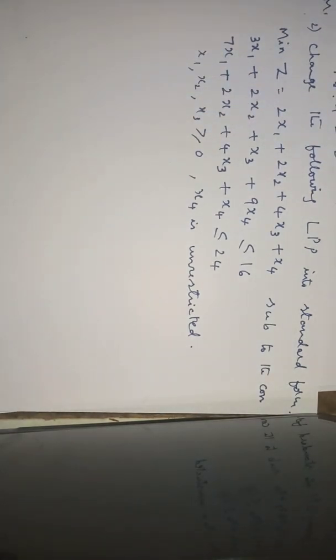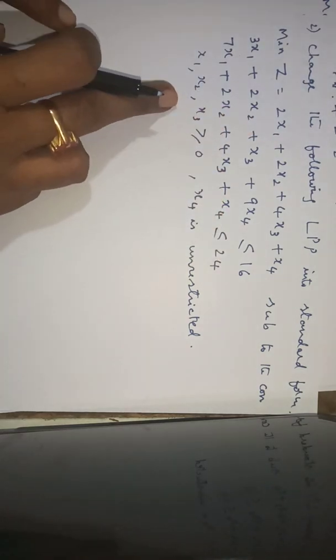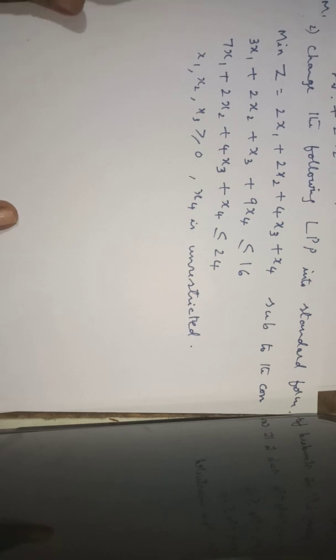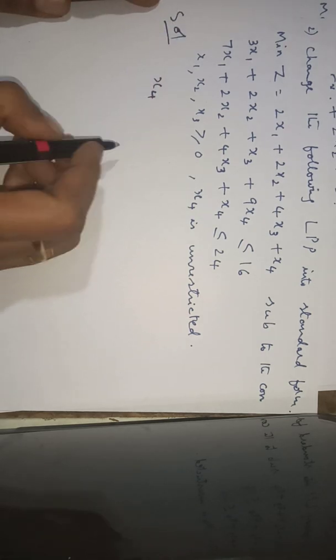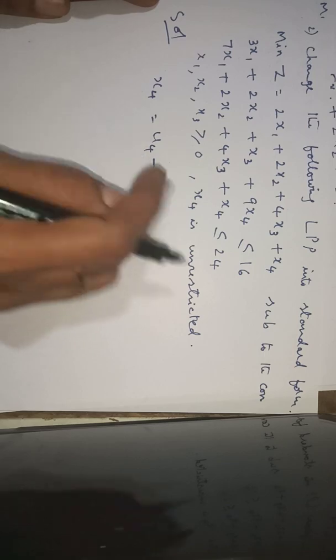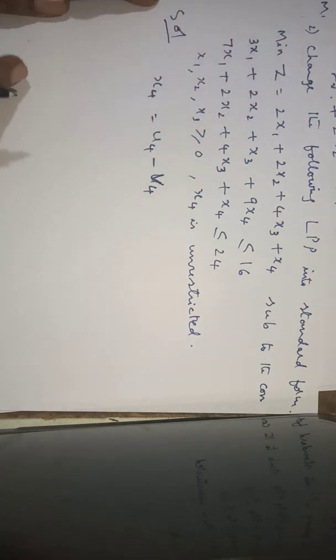In the second example, we rewrite the given LPP into standard form. The objective function is minimization of z equal to 2x1 plus 2x2 plus 4x3 plus x4, subject to constraints, where x1, x2, x3 are greater than or equal to 0 but x4 is unrestricted. Whenever a variable is unrestricted, we substitute x4 equal to u4 minus v4, replacing x4 with u4 minus v4 throughout.